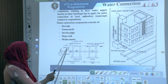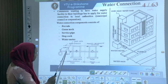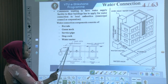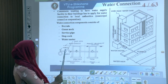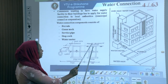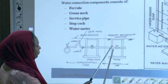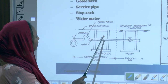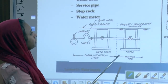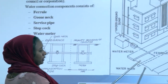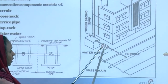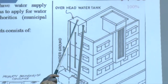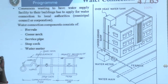The schematic shows a ferrule, then a gooseneck, followed by a service pipe. This section illustrates how a communication pipe and a service pipe are connected. At the property boundary of a consumer, there is a meter and a connected valve — the stopcock, located right before the meter. From the water main, water flows through the ferrule, the water meter, then into the underground sump, and finally the overhead water tank, from where it is distributed into buildings.